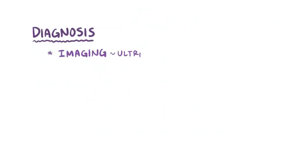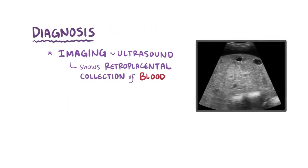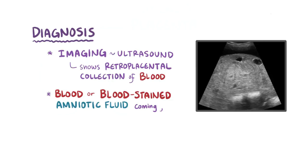Generally, a diagnosis is made based on imaging. Typically an ultrasound will show a retroplacental collection of blood. Also blood or blood-stained amniotic fluid might come from the vagina.